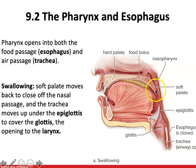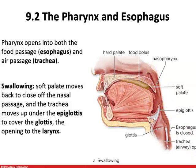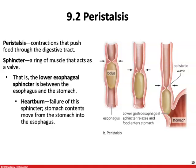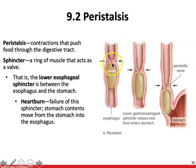The soft palate slams upward like a trap door, blocking off the nose. The epiglottis slams downward, blocking off the trachea. The food then slides down the esophagus. Once past the pharynx and into the esophagus, we undergo a process known as peristalsis — wave-like contractions of the smooth muscle in the esophagus that push just behind the bolus and move it down into the stomach.